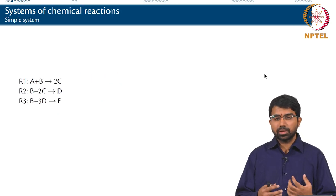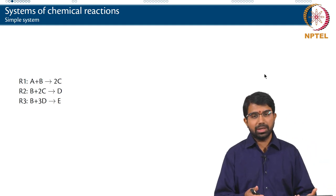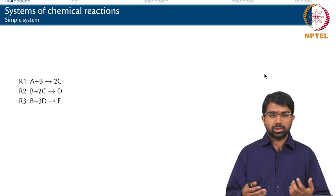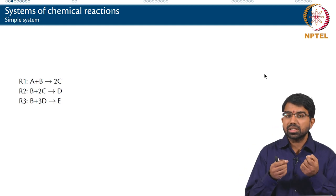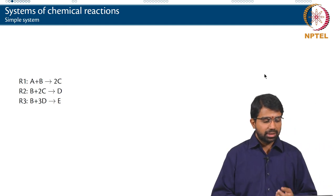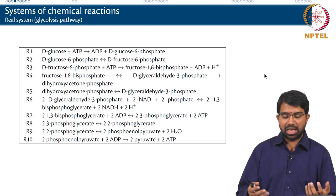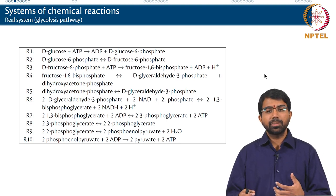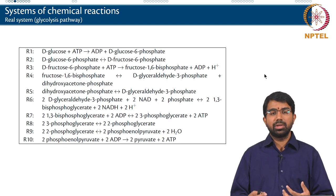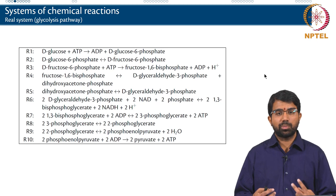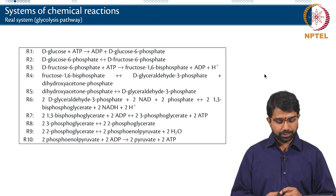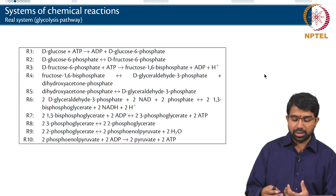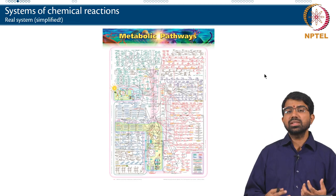What is metabolism and what kind of systems are we talking about? You may be familiar with simple reactions like A plus B going to 2C, B plus 2C going to D, B plus 3D going to E — each with a defined stoichiometry. A more real system is glycolysis: starting from D-glucose plus ATP giving ADP plus glucose-6-phosphate, through about 10 reactions, finally producing 2 moles of ATP and 2 moles of pyruvate from 1 mole of glucose. This is a simplified view of what happens within a living cell.